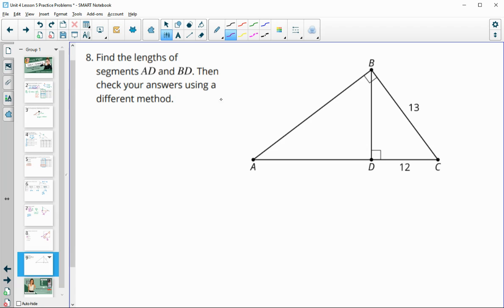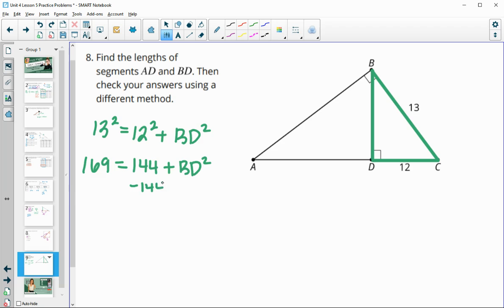All right, then number 8 asks us to find the lengths of AD and BD. Here's BD, and you hopefully see that that is a missing leg in this little green right triangle and that you know the other two sides. So we'll be able to do Pythagorean theorem here by doing 13 squared equals 12 squared plus BD squared. 13 squared is 169. 12 squared is 144. We'll subtract 144 from both sides. And we get 25 equals BD squared. And then square root of both sides, and we get 5 for BD.